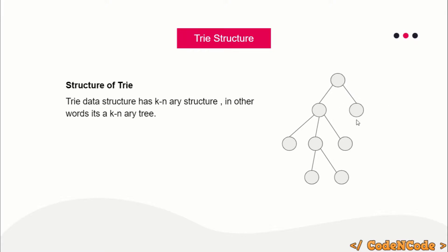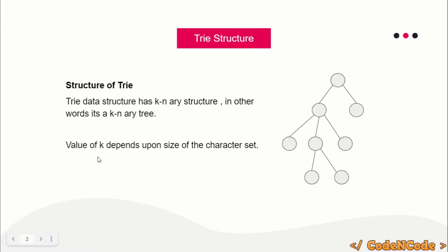For example, for this root node we have two child nodes, for this node we have three child nodes, for this node we have two, and for this one zero. So at most a node can have three child nodes in a ternary tree. Same way, a trie is a k-ary tree where k depends upon the number of unique characters in the words we are going to insert. For example, if words only use small English letters, k would be 26.